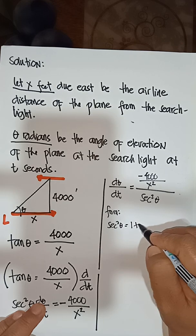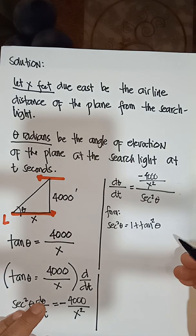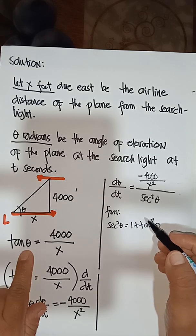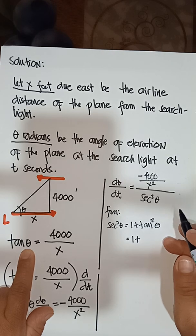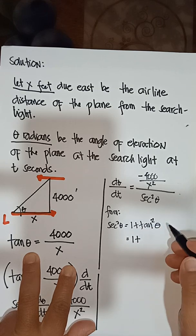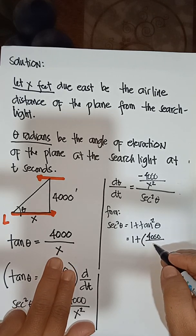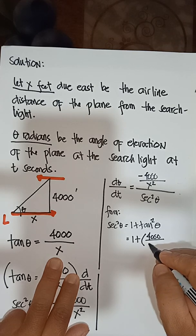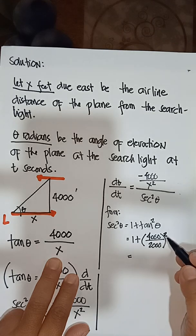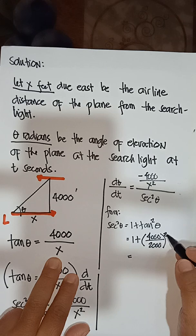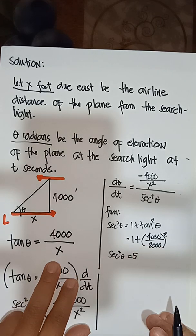We need the value of sec²θ. Using the identity: sec²θ = 1 + tan²θ. We know tan θ = 4000/x and x = 2,000, so tan θ = 4000/2000 = 2. Therefore sec²θ = 1 + 2² = 1 + 4 = 5.